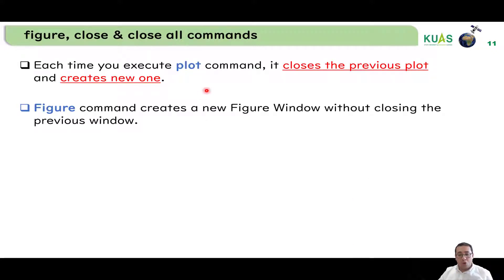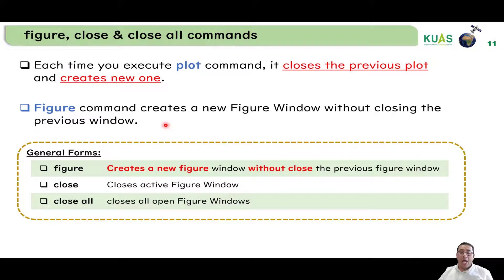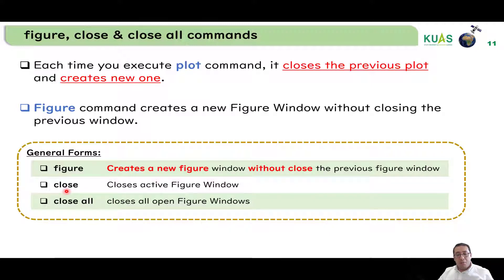Every time we execute the plot command, it closes the previous figure window and creates a new one. But if we need to keep the previous window, we should use the figure command. The general form is just the word 'figure', which creates a new figure window without closing the previous one. To close the active figure window we use the close command, and to close all open figure windows we use the close all command.